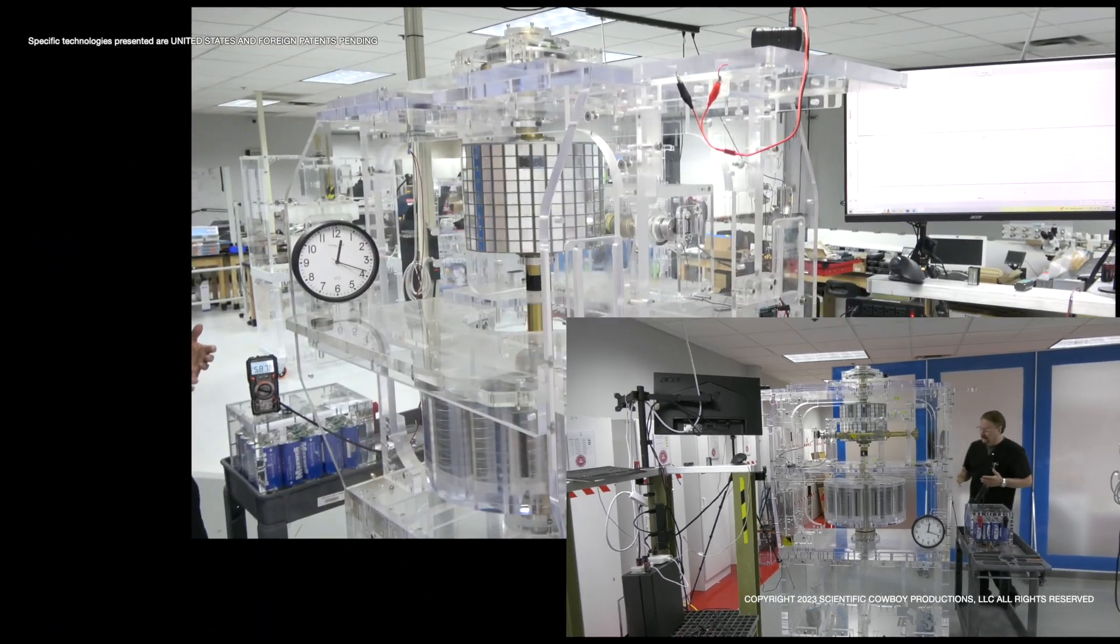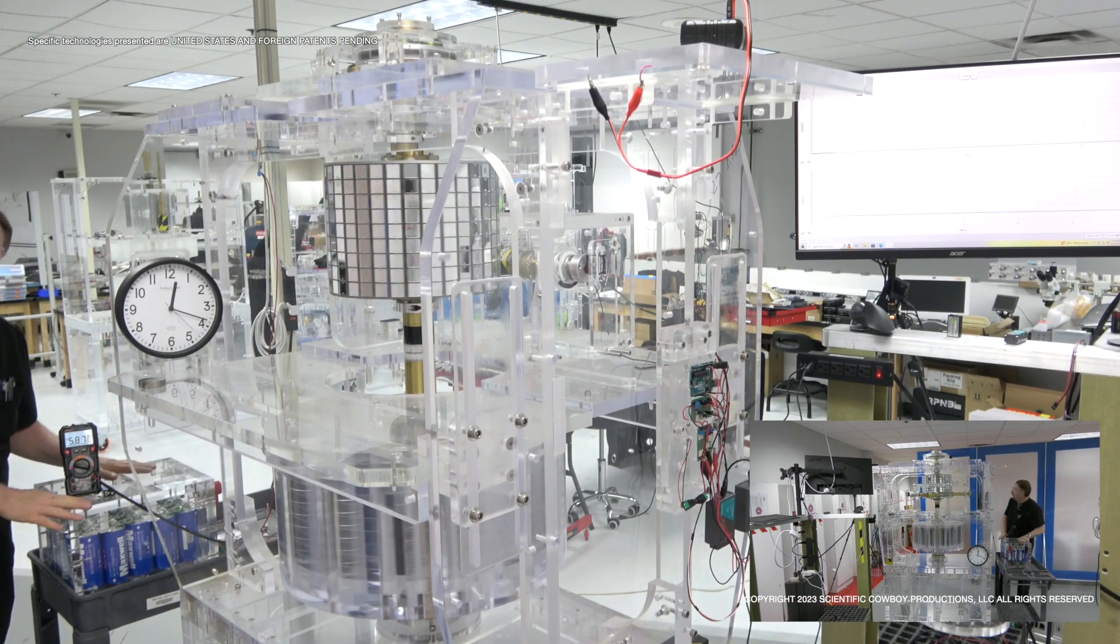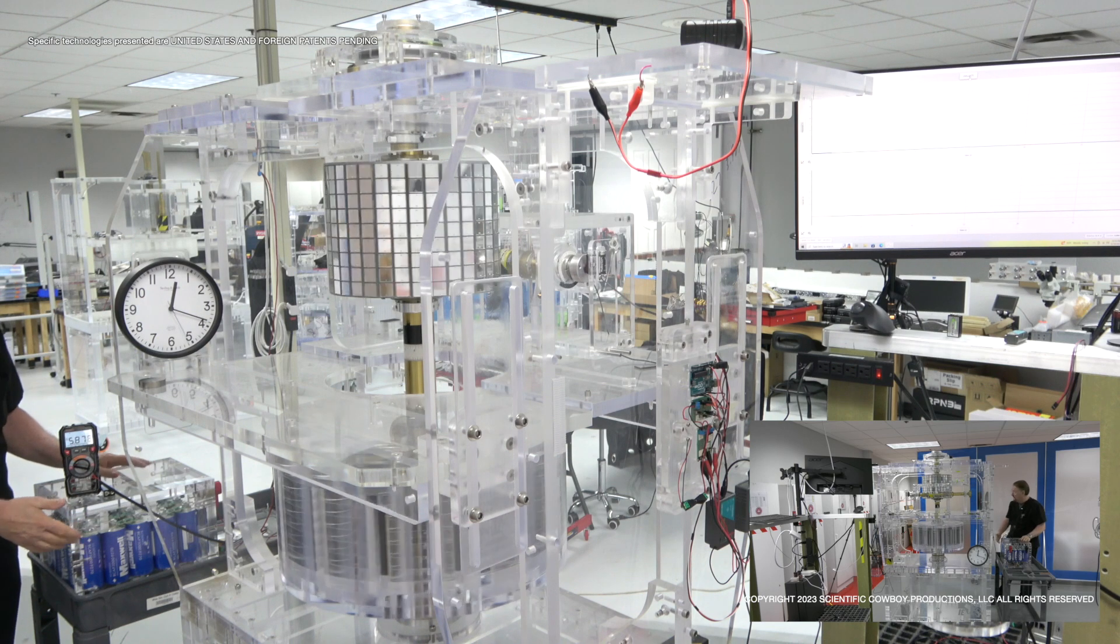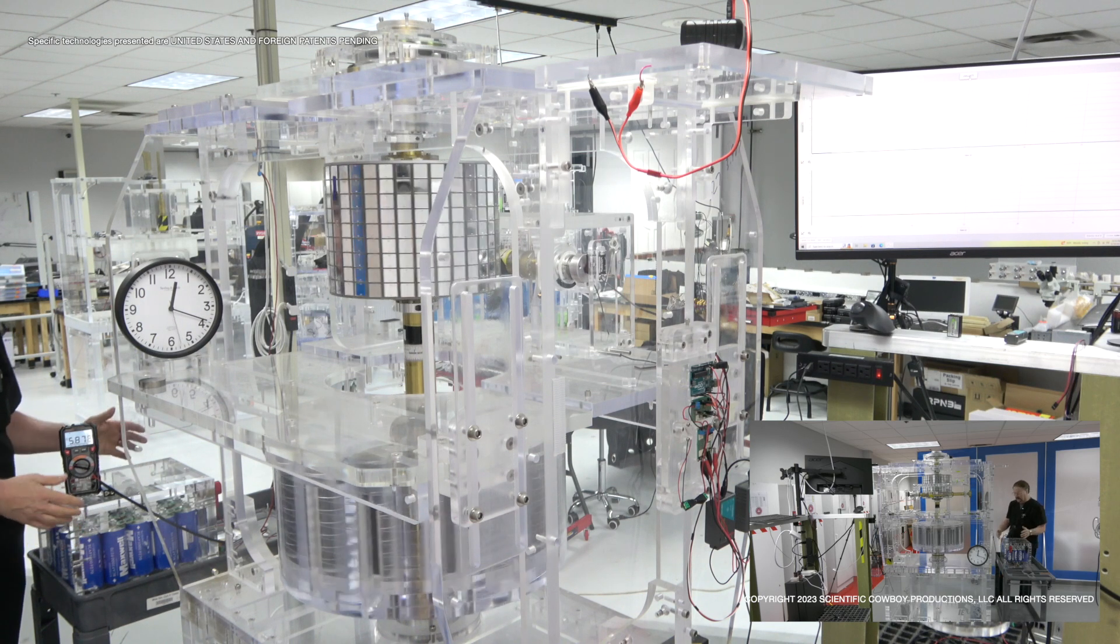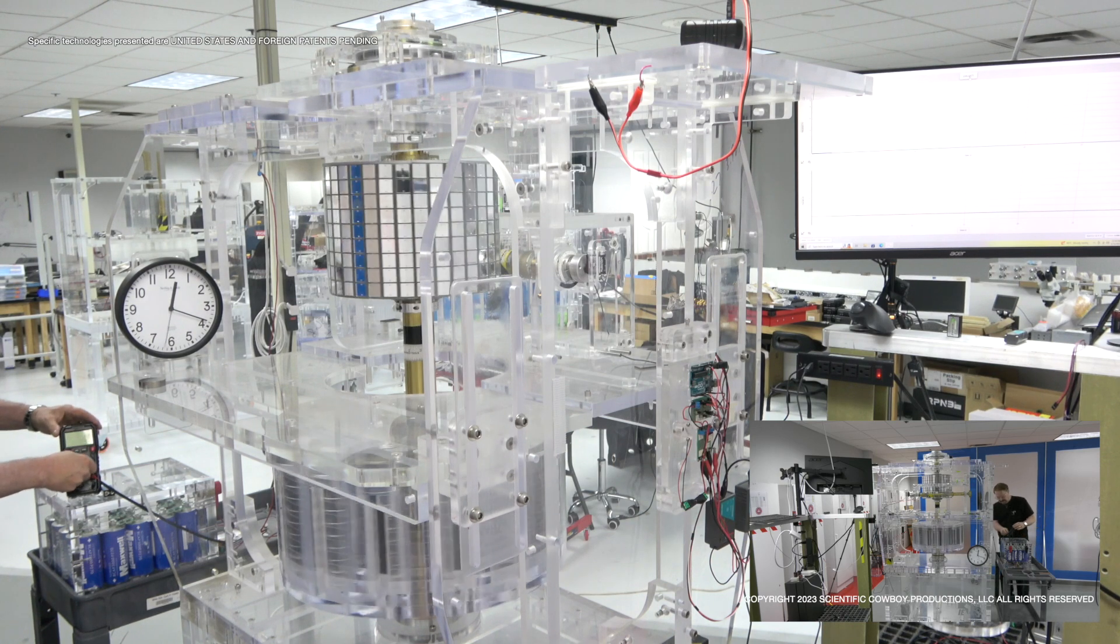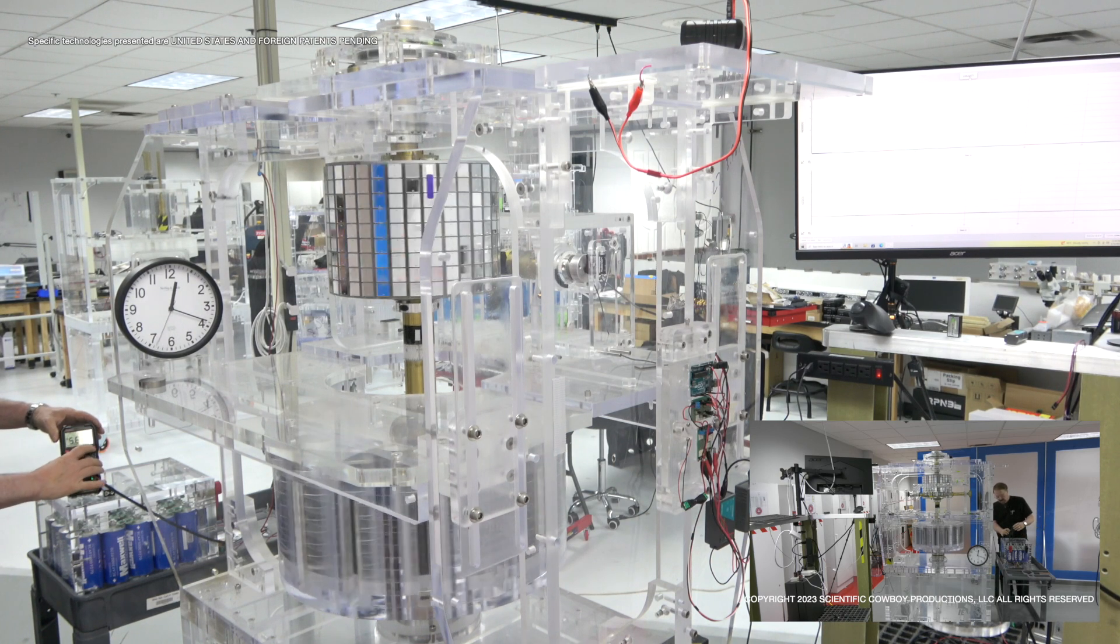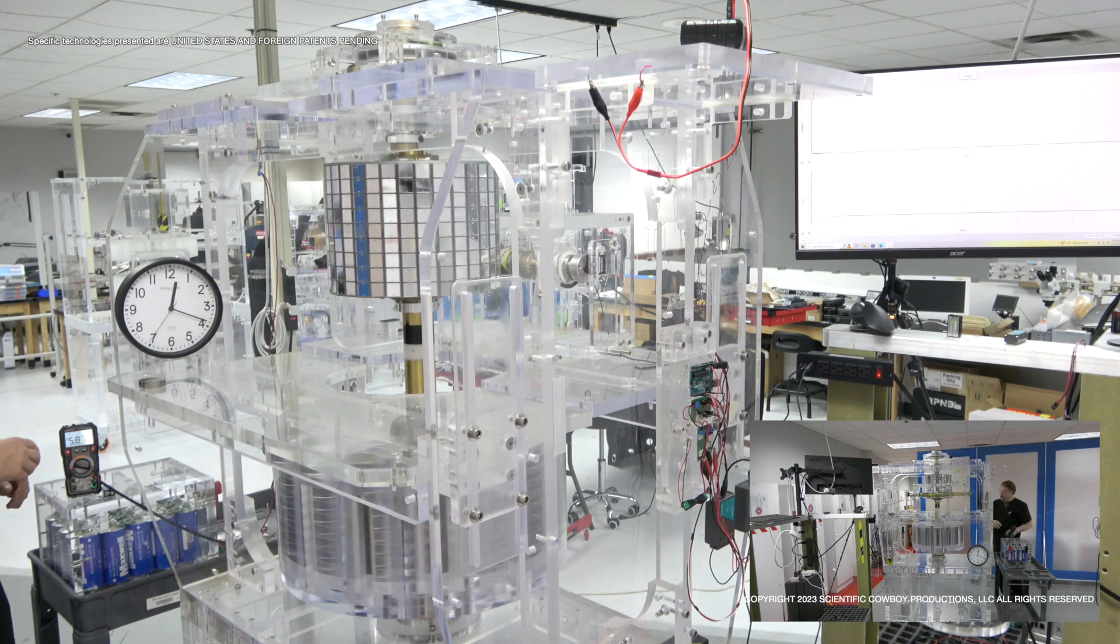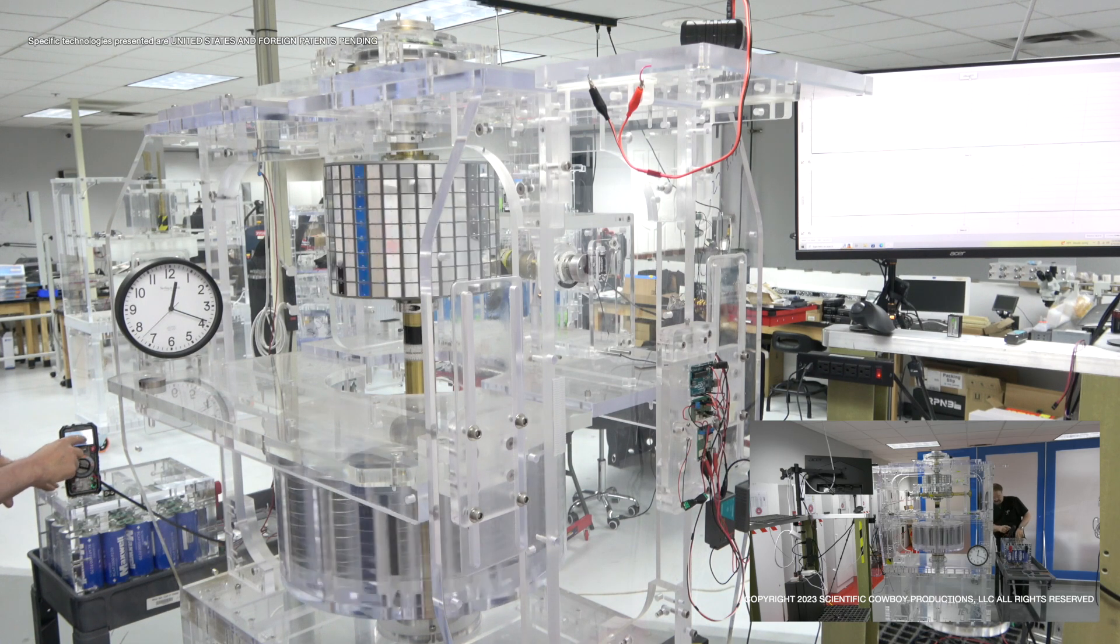Okay, back here we have a 24-volt capacitance system and it's transparent. These happen to be Maxwell capacitors, but we use others. And then we have a meter that displays, I'm going to reset this, that displays the amount of voltage that's currently in the system. It looks like we got 5.878 volts.